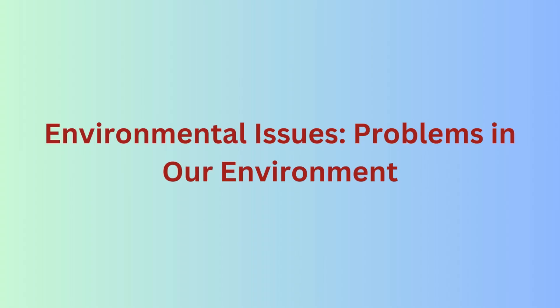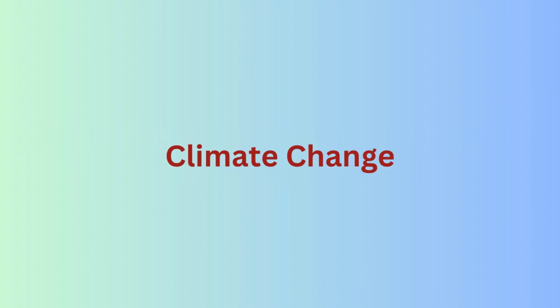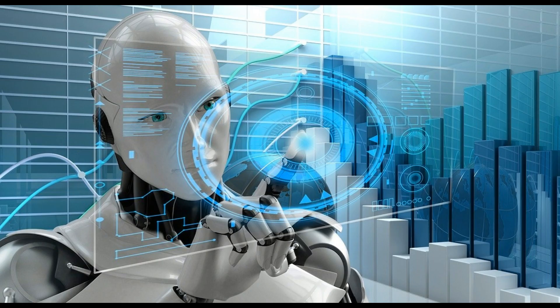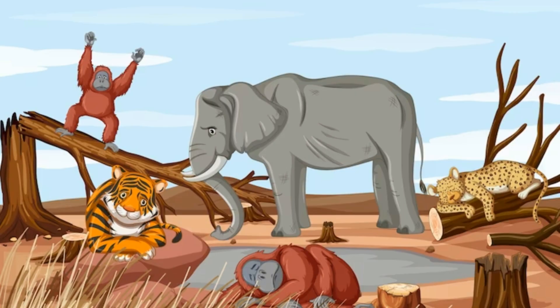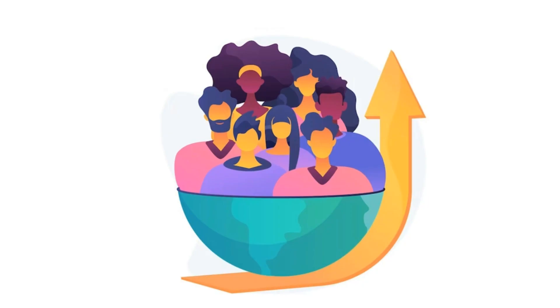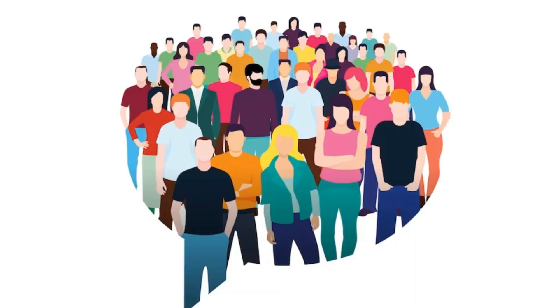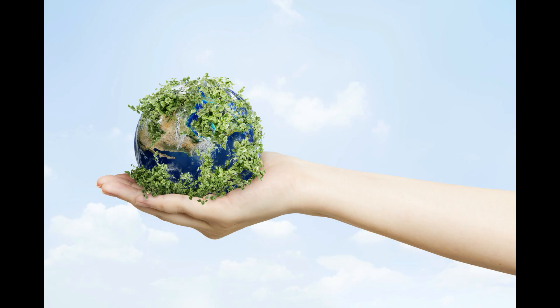Welcome to yet another video session. In this session, we will discuss about the major environmental issues and how we can deal with them. Today we will discuss the effects of climate change, the role of AI in enhancing the quality of the environment, how AI can be used to save planet Earth, how we can conserve biodiversity, what is poverty, and the effect of growing population on the environment. So without wasting time, let's get started.